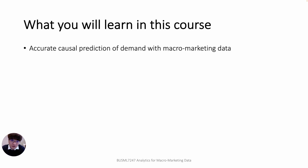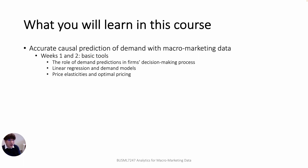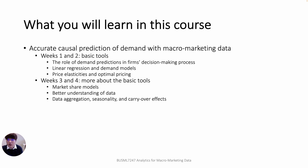Let's move on to the learning objectives of this course. This course is a six-week course. During the six weeks, you will learn several methods for causal prediction of demand with macro marketing data. You will learn basic tools during the first two weeks, including the role of demand predictions in firms' decision-making process, linear regression and demand models, and price elasticity and optimal pricing. During the next two weeks, you will learn more about basic tools, including market share models, detailed concepts of data and data aggregation, seasonality, and carryover effects.